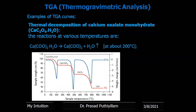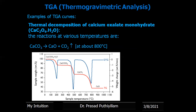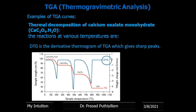Another example is the thermal decomposition of calcium oxalate monohydrate (CaC₂O₄·H₂O). At around 200 degrees Celsius it loses the water of hydration. At around 500 degrees Celsius it loses carbon monoxide to become calcium carbonate. At around 800 degrees Celsius the calcium carbonate further decomposes to give calcium oxide with removal of carbon dioxide gas. In this thermogram, the red line indicates the TGA curve and the blue line represents the derivative thermogram, which gives sharp peaks to easily identify the exact temperature at which decomposition or weight loss occurs.